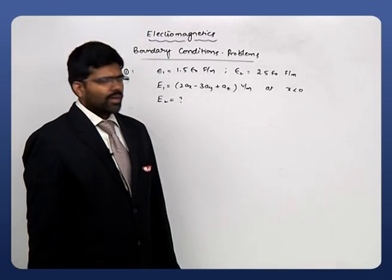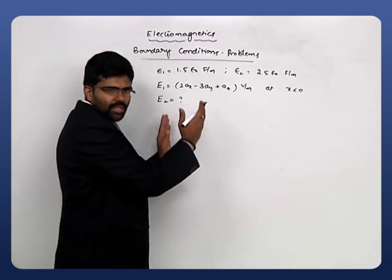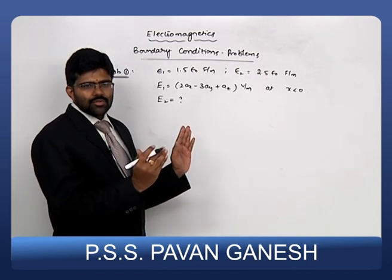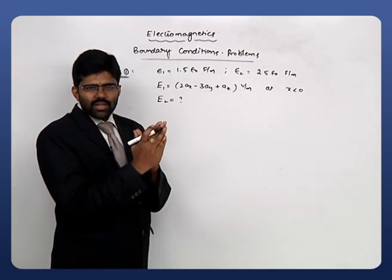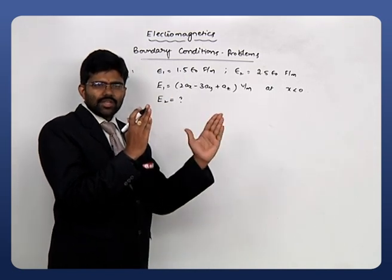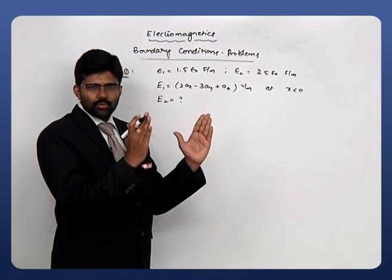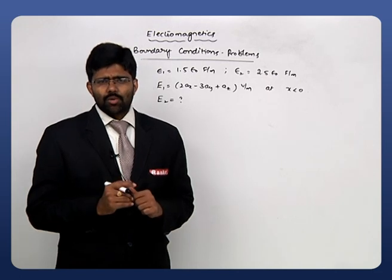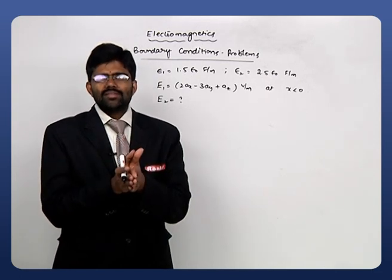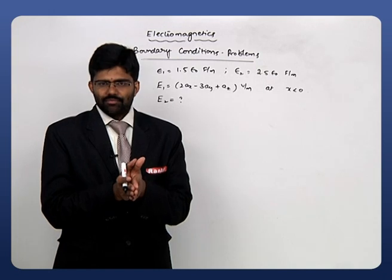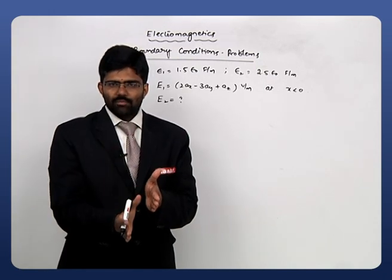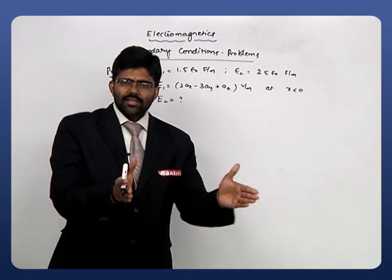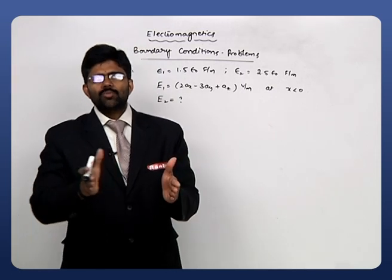The data given to us is that there is a boundary, and that boundary is clearly x=0. At the x=0 boundary we are supposed to apply the boundary condition. For x less than zero we have the electric field given to us; for x greater than zero we are supposed to obtain the electric field. x=0 indicates the yz plane, so negative x axis is to the left and positive x axis is to the right.